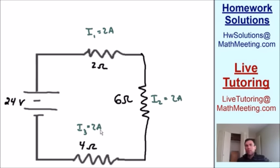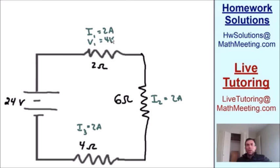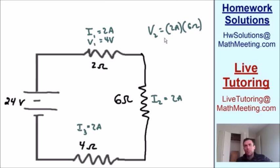Now let's find the voltage across each resistor using V = IR. The voltage across resistor 1: 2 amps × 2 ohms = 4 volts. The voltage across resistor 2: 2 amps × 6 ohms = 12 volts.